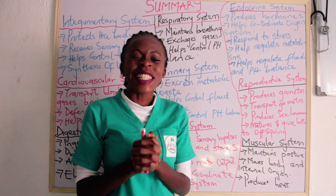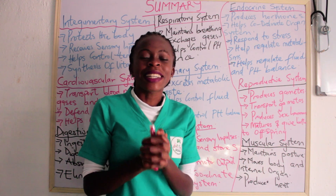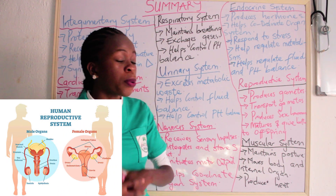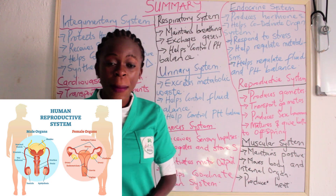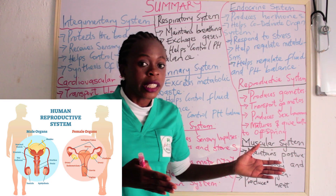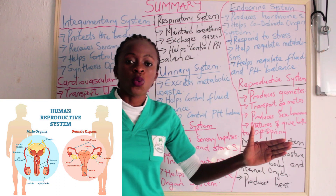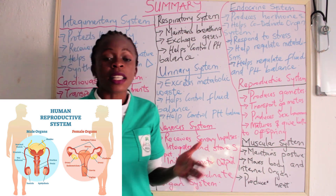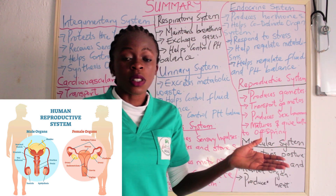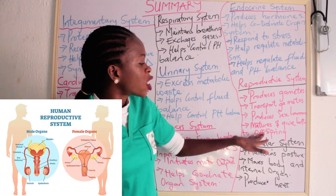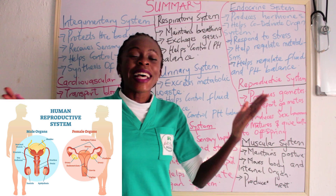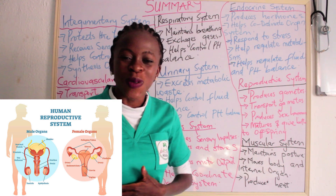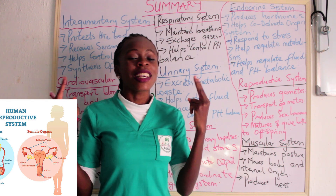The reproductive system produces gametes — both male and female gametes. It also helps to transport those gametes. The reproductive system produces sex hormones such as estrogen and testosterone, and it also matures and gives birth to offspring. Without the reproductive system, we would not be able to give birth.